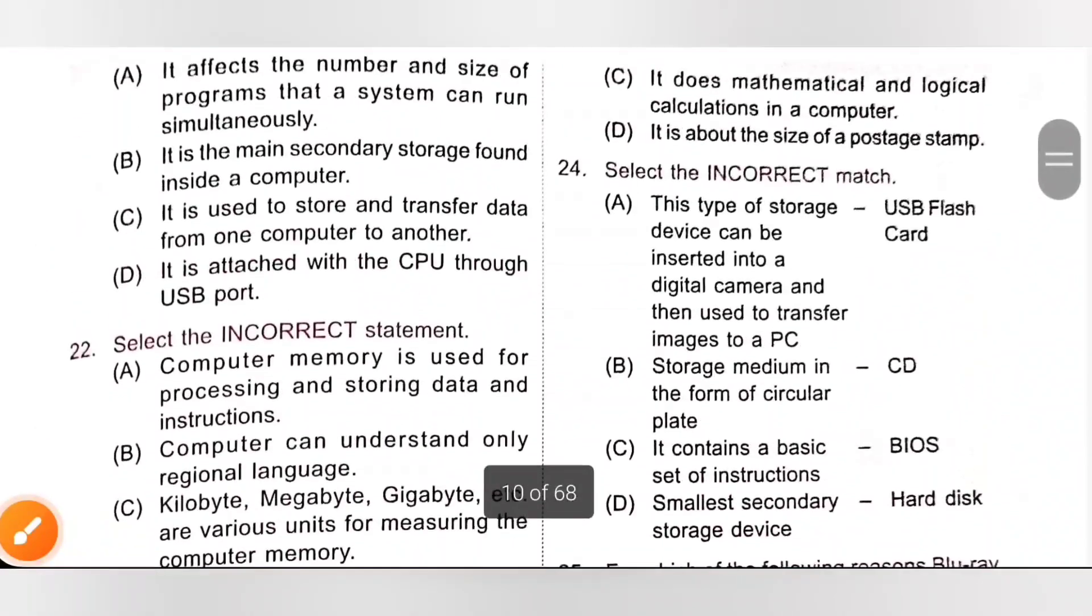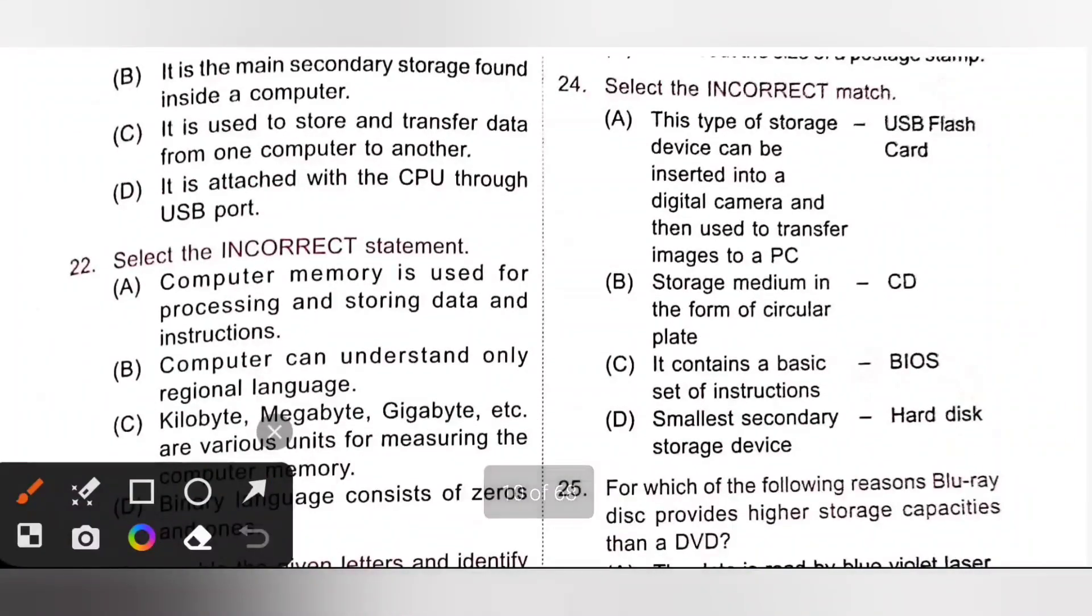Next one. Select the incorrect match. Option A, this type of storage device can be inserted into a digital camera and then used to transfer images to a PC. USB flash card. It is the correct match. B, storage medium in the form of circular plate, CD. It is also correct match. C, it contains a basic set of instruction, BIOS. BIOS means basic input-output system. It is also correct match.